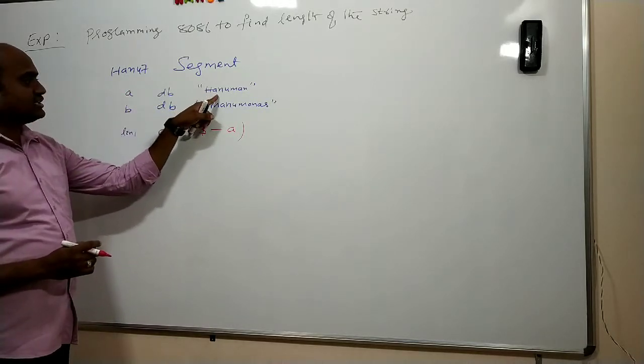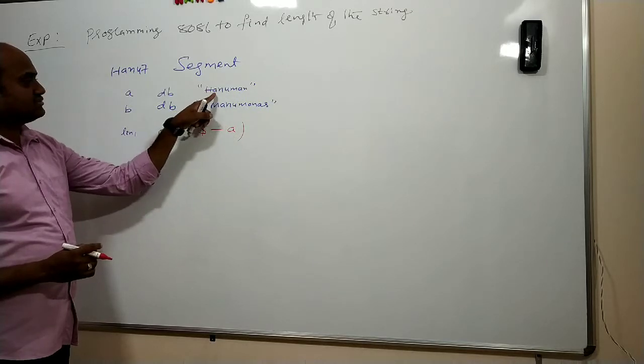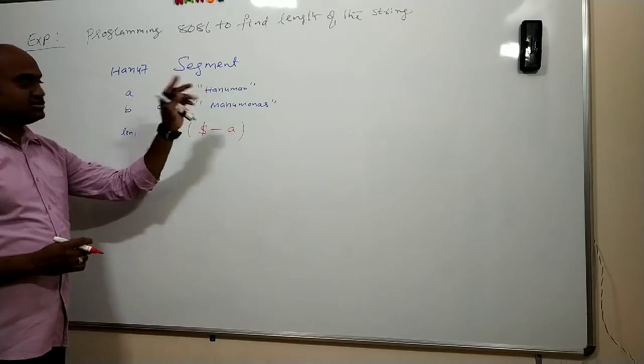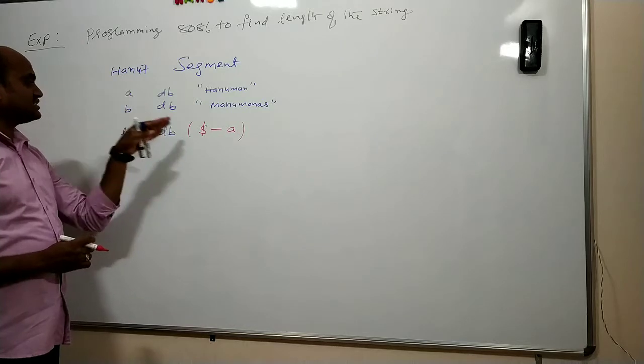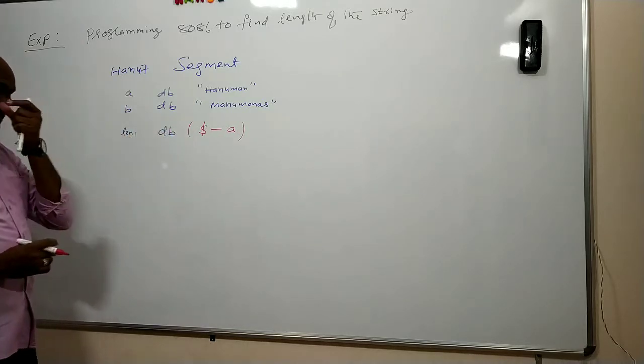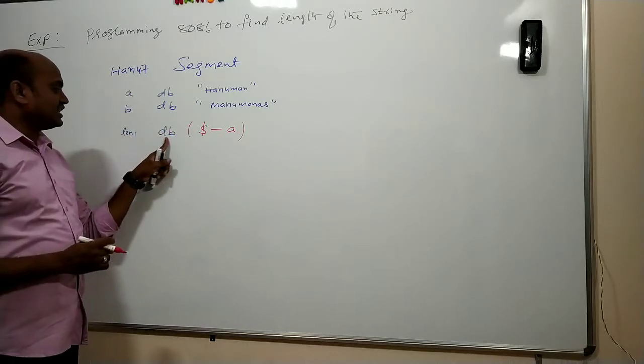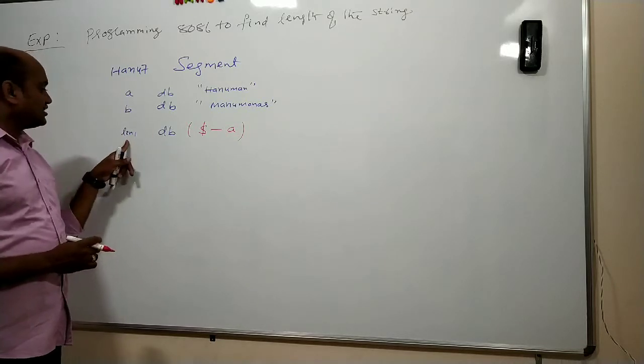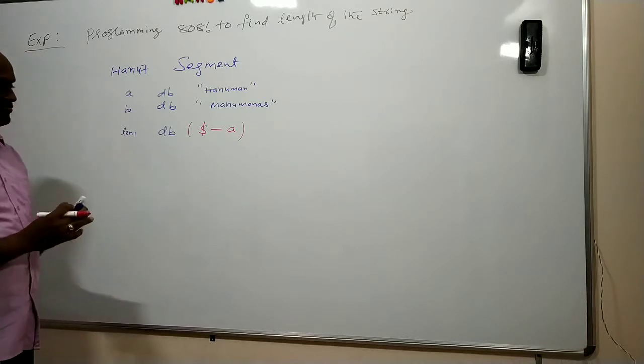A string is Hanuman. There are seven characters in this: three, four, five, six, seven. So it will return length of the string a as seven in the computer's memory for which I have allocated byte size and that data can be accessed by the variable name len1.